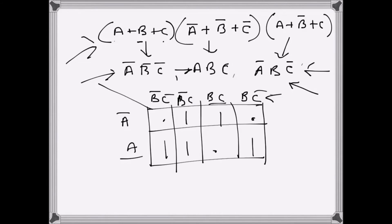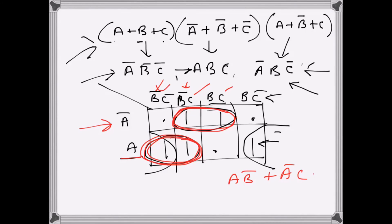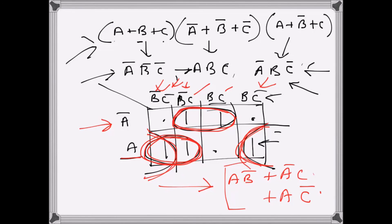Once we have the ones placed, we can minimize. One group can be this, another group can be this, and the last one can go with this adjacent cell. For the first group, a is not changing and b bar is not changing, giving a b bar. For the second group, a bar and c are not changing, giving a bar c. For the last group, a and c bar are not changing, giving a c bar.